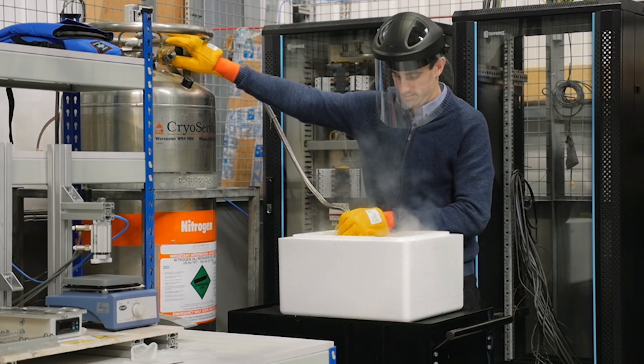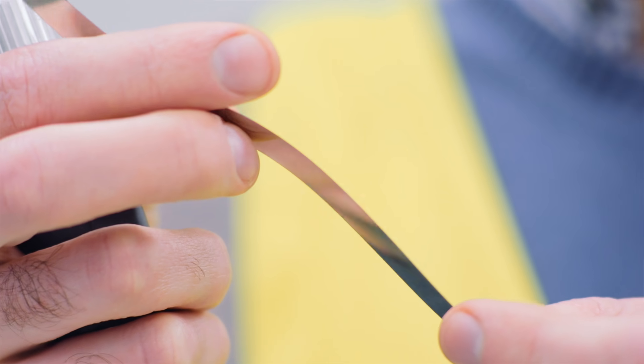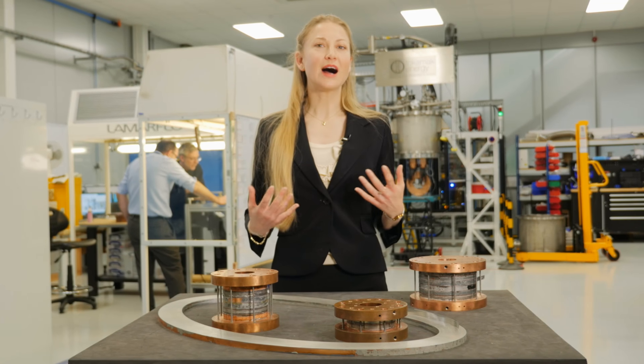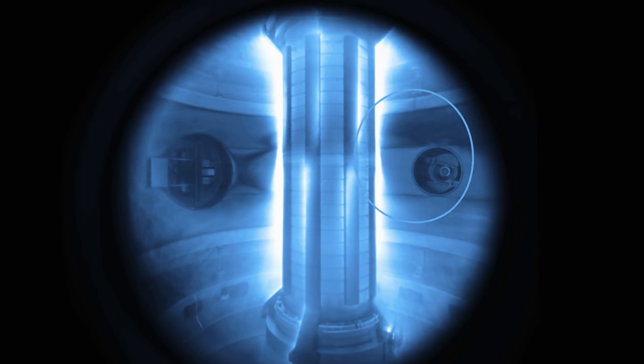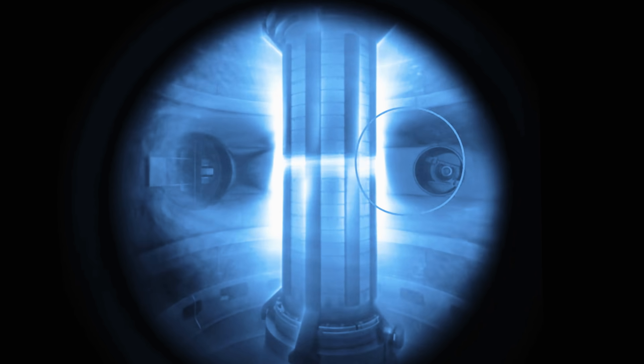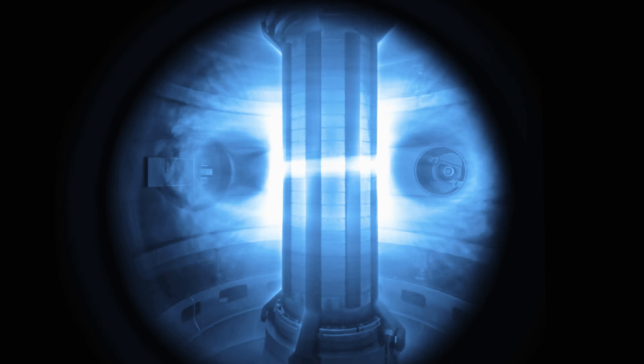High-temperature superconductors could be a game-changer for fusion in tokamaks because they enable high magnetic fields to be produced, and it is the strong magnetic fields that hold the hot fusion fuel stable away from the machine's walls. Higher magnetic fields open up the possibility of building smaller, more economical fusion machines.